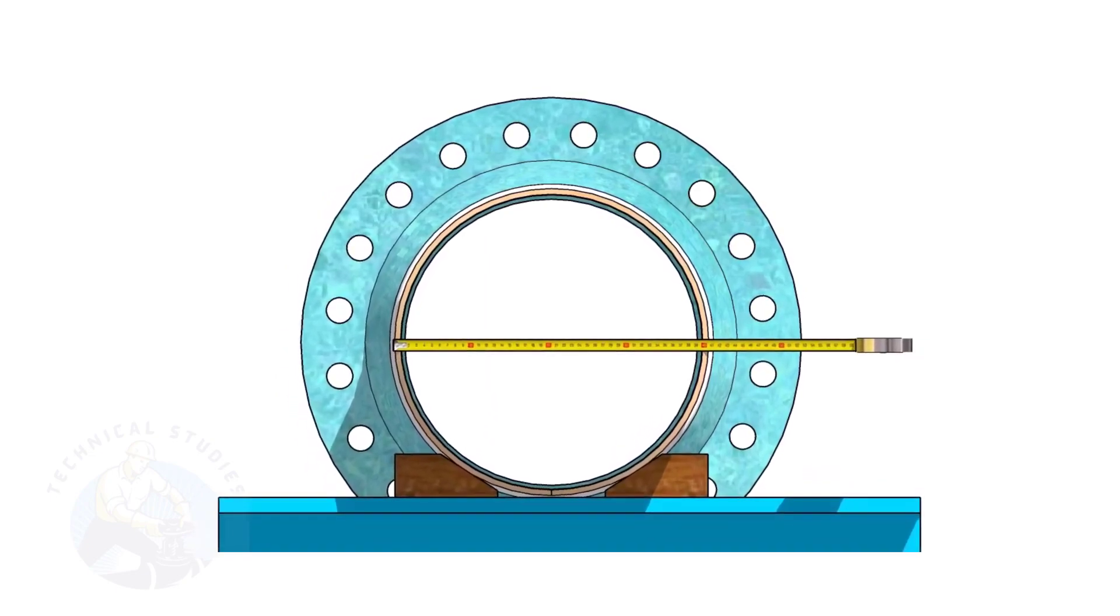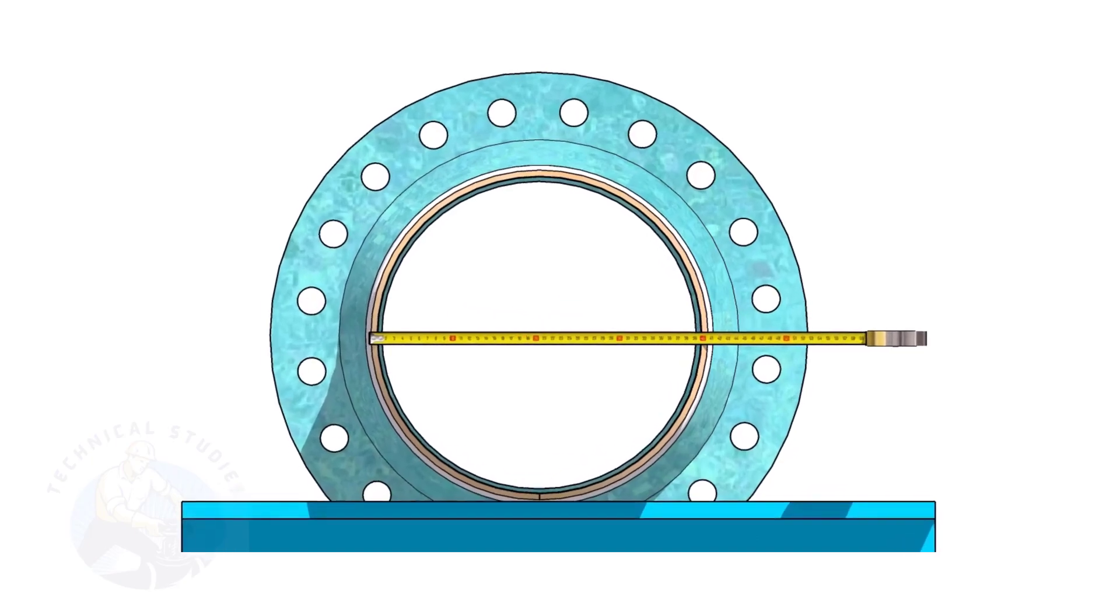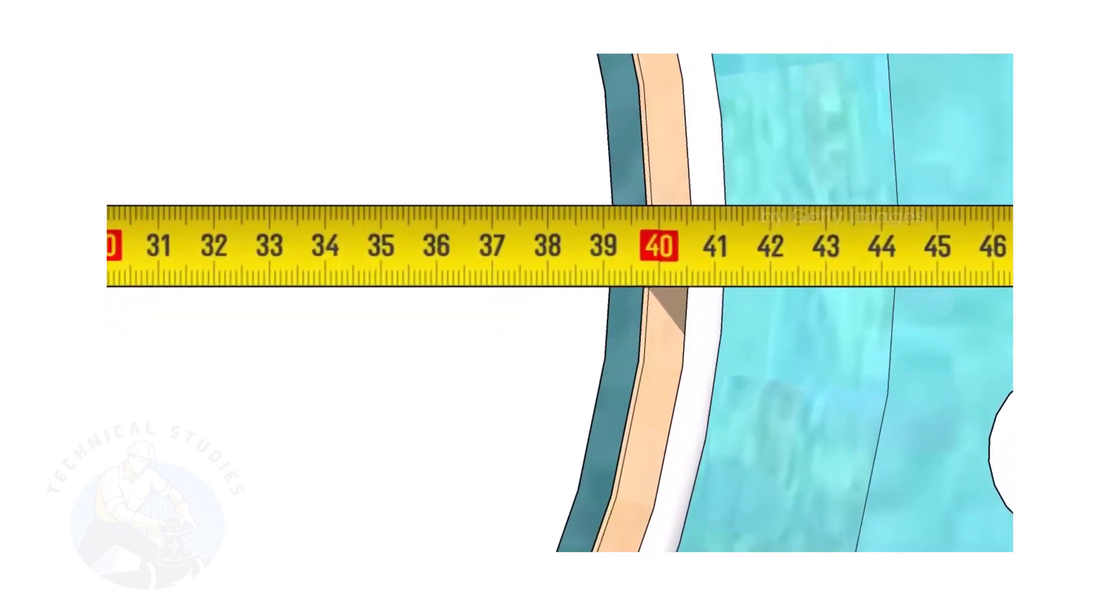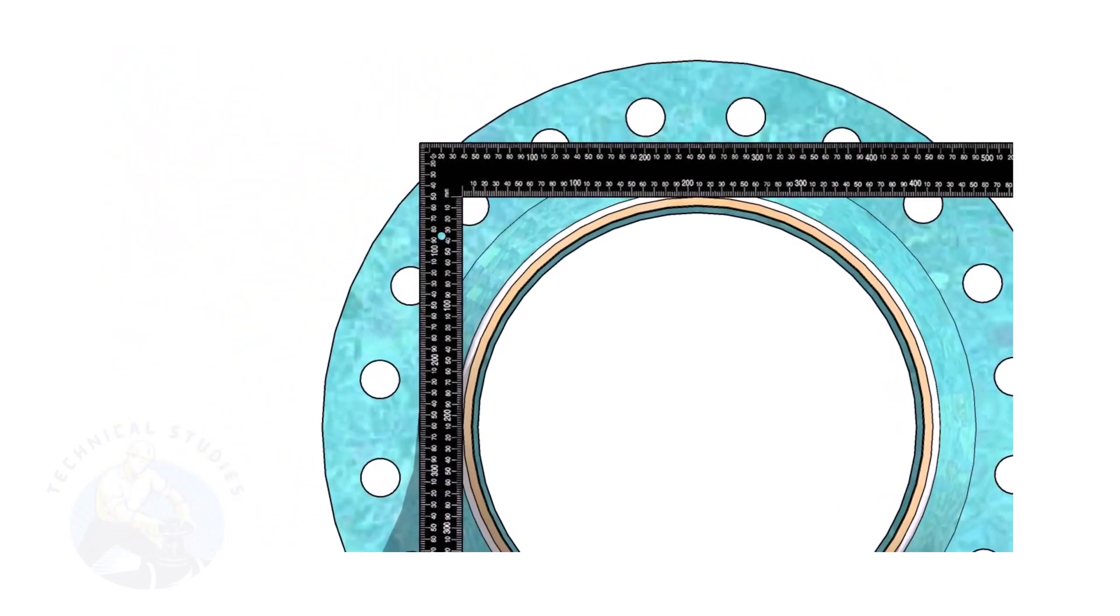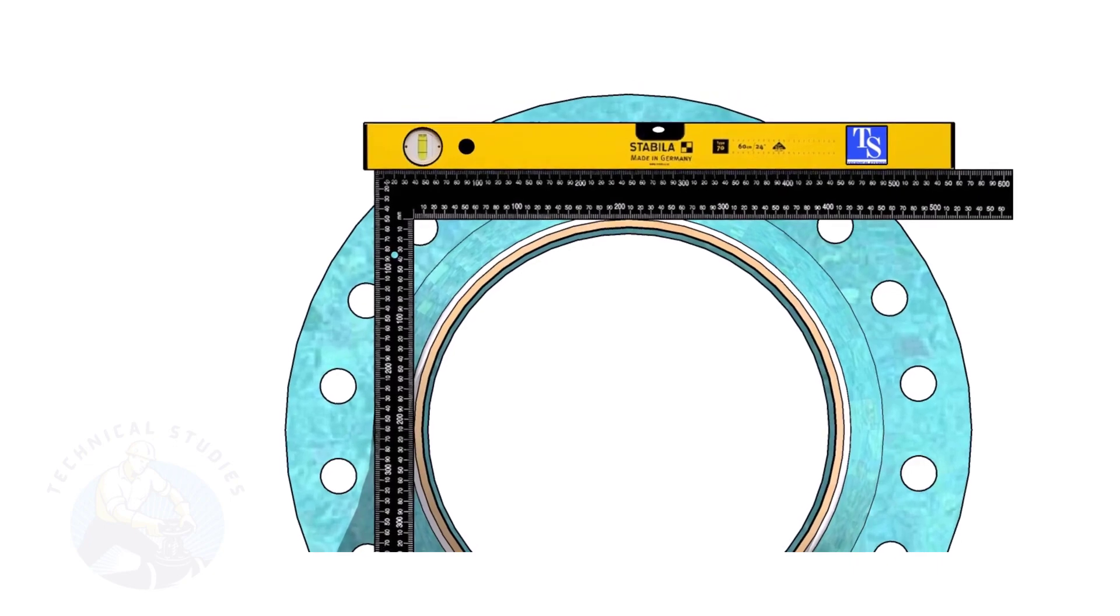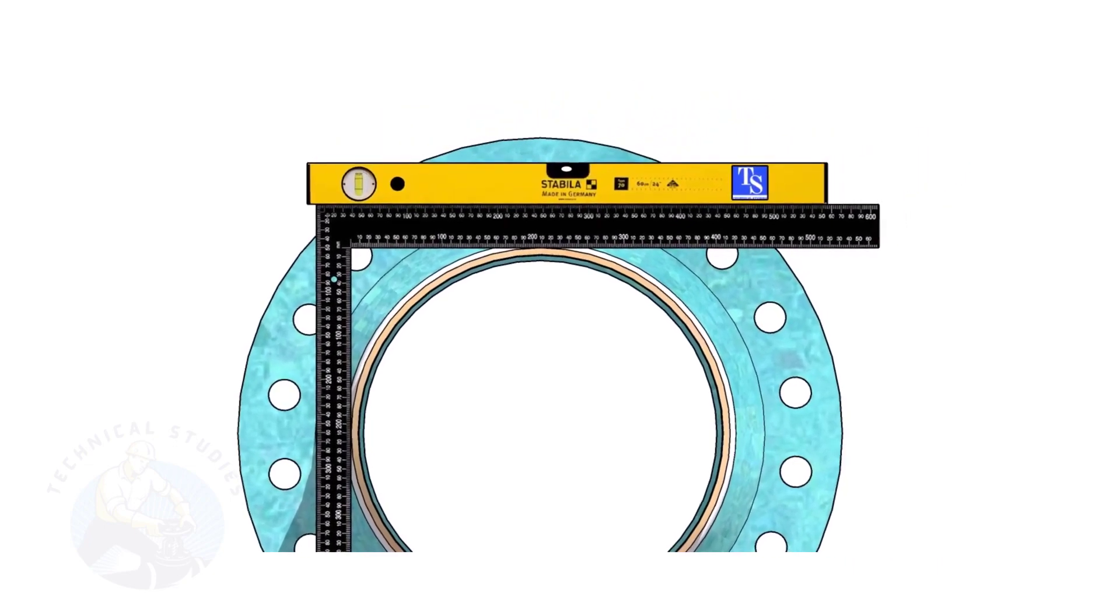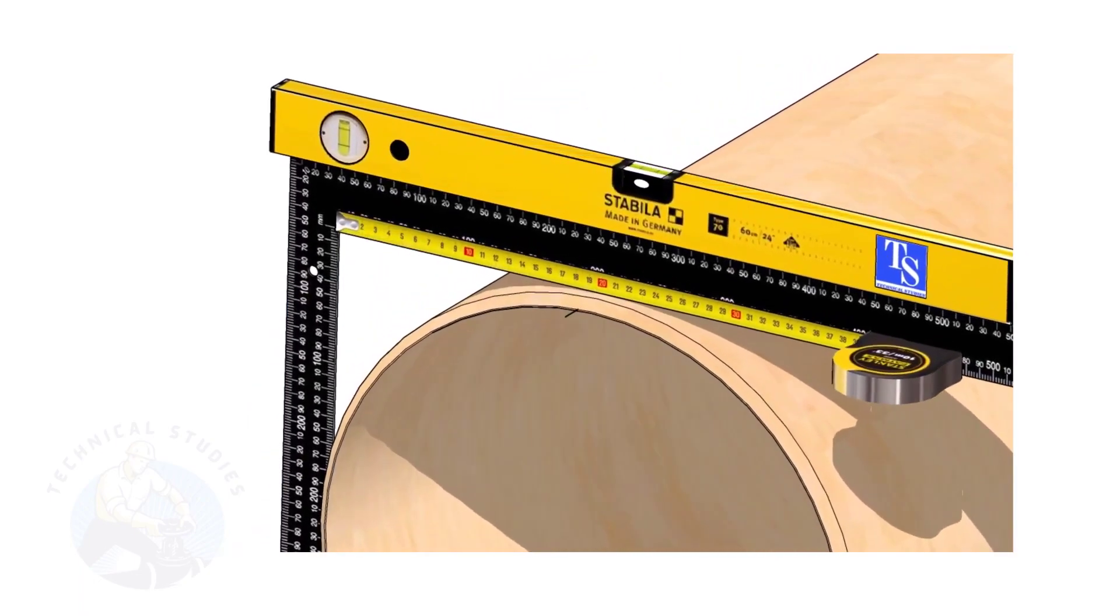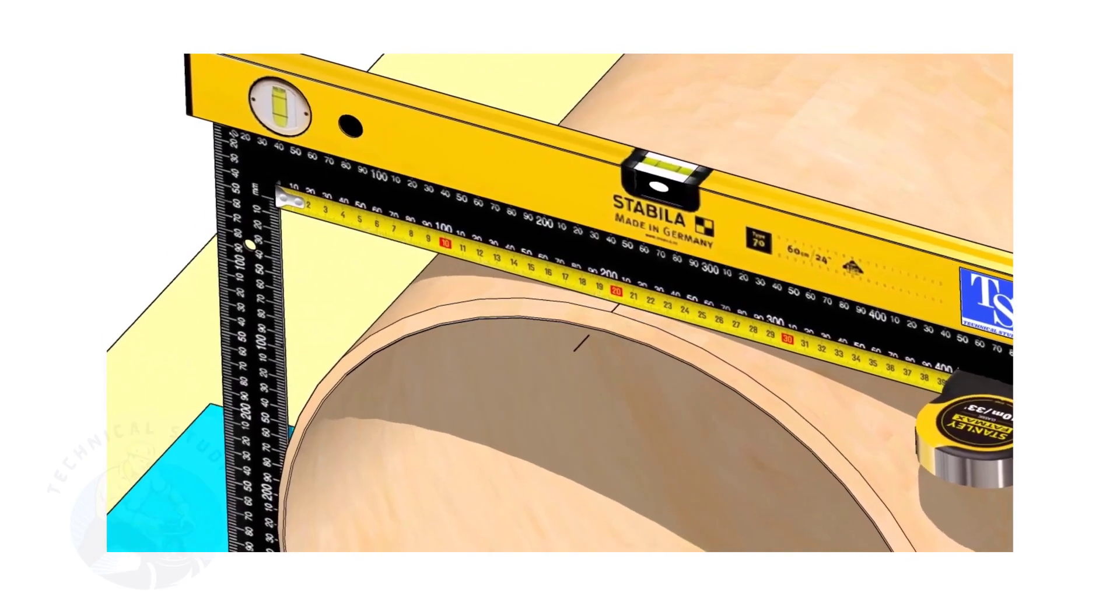Check the outer diameter of the pipe. Hold a large right angle on the pipe as shown. Put a spirit level on the right angle and correct the top level. Mark half OD of the pipe on the top side. Here, the half OD is 203 millimeters.